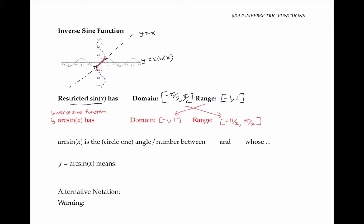Now an inverse function undoes the work of a function. So if the function sine takes angles theta to numbers x, then the inverse sine or arc sine takes numbers x back to angles theta.